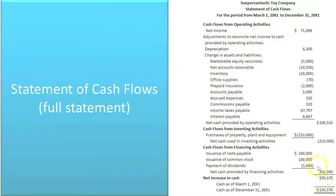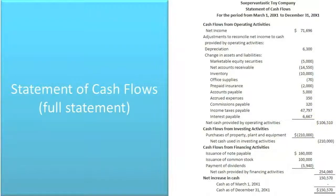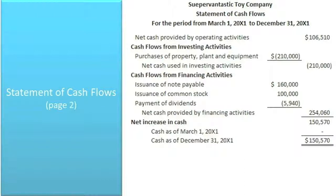In future periods, we will have a beginning cash balance and the change for the year will be added or deducted from that. One thing you should notice is that accrual basis net income said we earned $71,696, but the actual cash brought in from those operations was $106,510 — meaning accrual basis net income is not the same as your cash inflows from operating activities. I've broken it out into page one, which is your operating activity cash flows, and page two, which is your investing and financing cash flows.